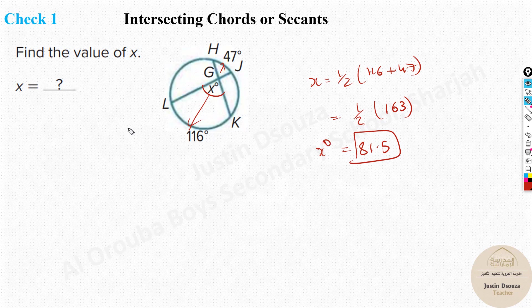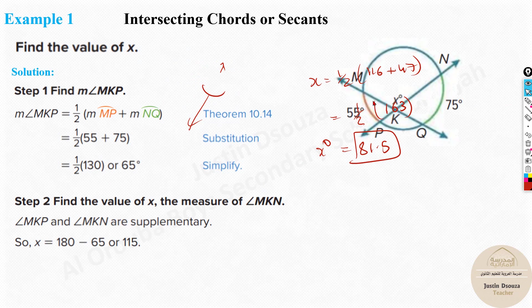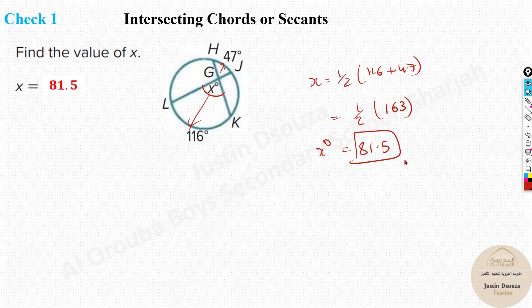Now, in this case, please don't do anything extra. Don't do 180 minus or plus because we already got the opposite arcs. Only in the previous case, because we didn't have the opposite arcs of the angle X, we found the other side. And then we did 180 minus 65 and got the answer. But here it's very straightforward. It's 81.5. This should be in degrees.